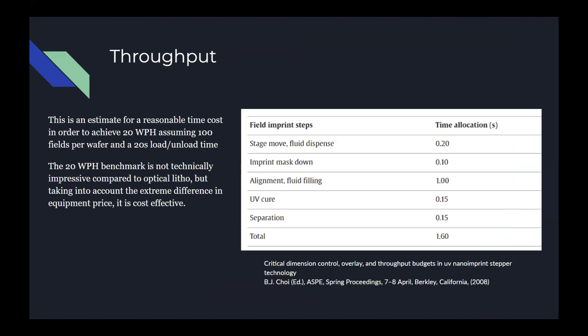The final thing we will discuss is throughput. This chart was created as a reasonable target for a UV nanoimprint lithography process, assuming a target of 20 wafers per hour, each having 100 fields to be patterned. As you can see, the total process time of the imprint is less than 2 seconds. This is very good — it's not exceeding cutting-edge optical lithography, but it is very close to being on par with the fastest optical tracks. This is impressive given its much lower price, making it very cost effective.